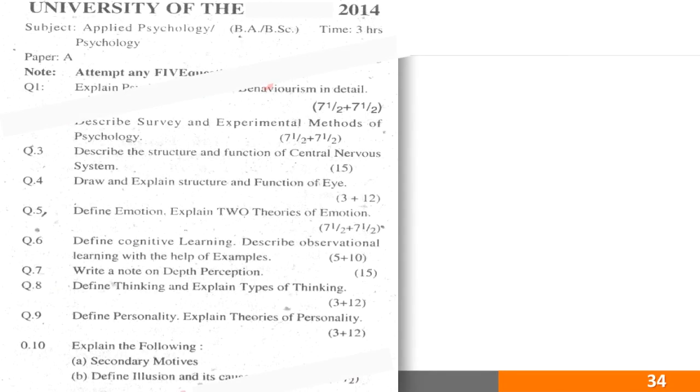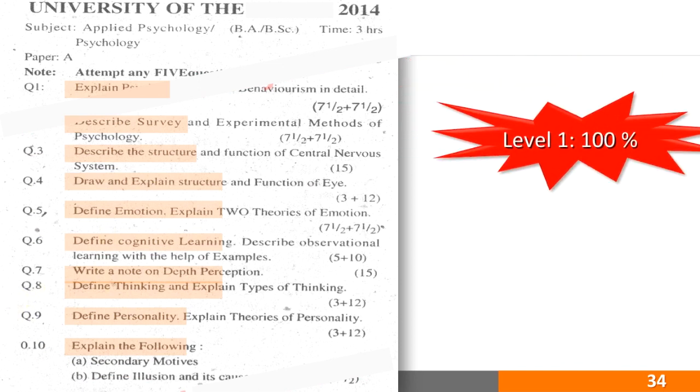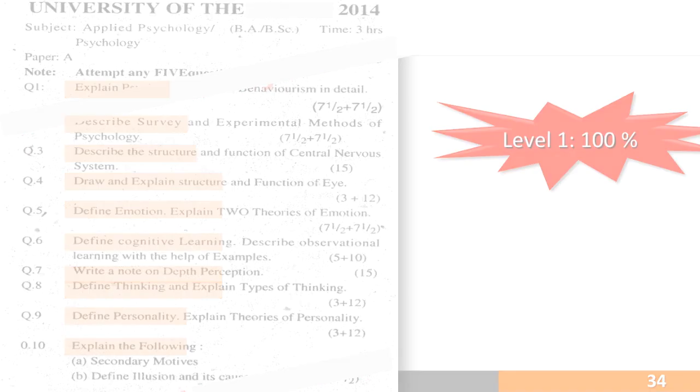This is another paper of bachelor's degree program in one university. The name of the subject is applied psychology. 100% of the questions are from level 1, that is explain this, describe this, define this, write this, etc. This basically means 100% of the questions of a subject called applied psychology are given on basically level 1.